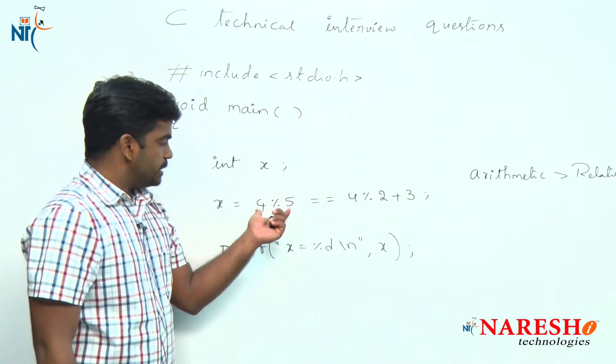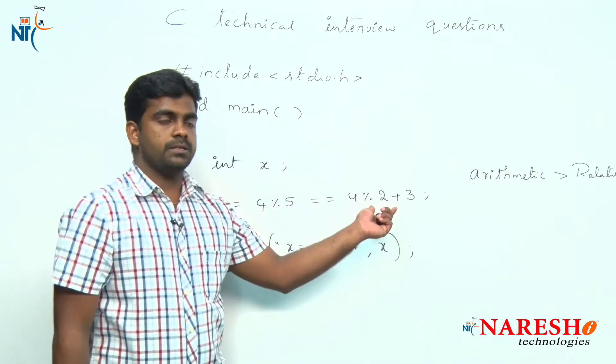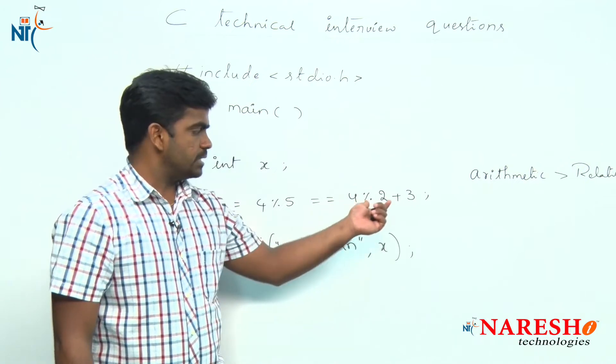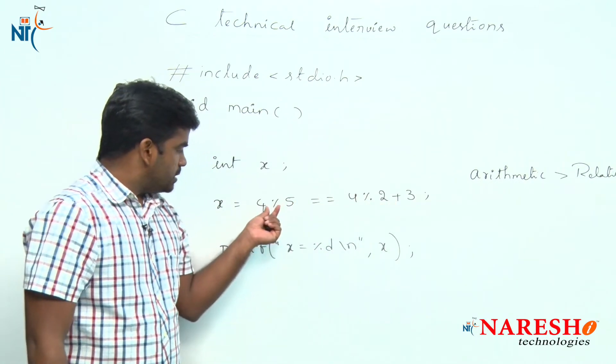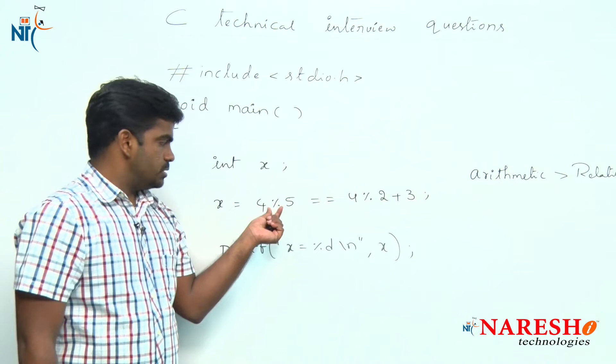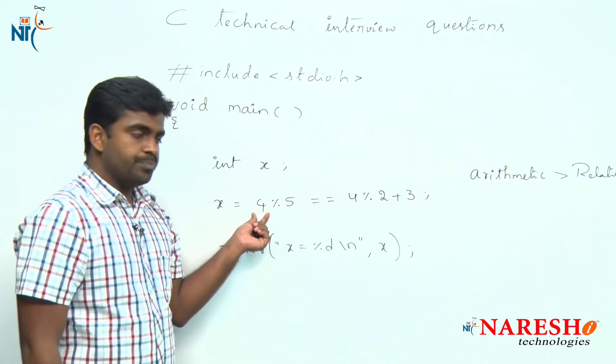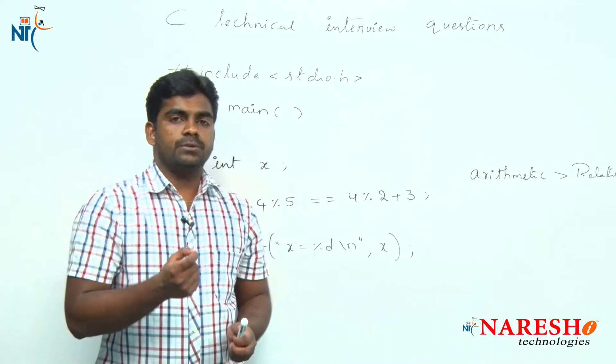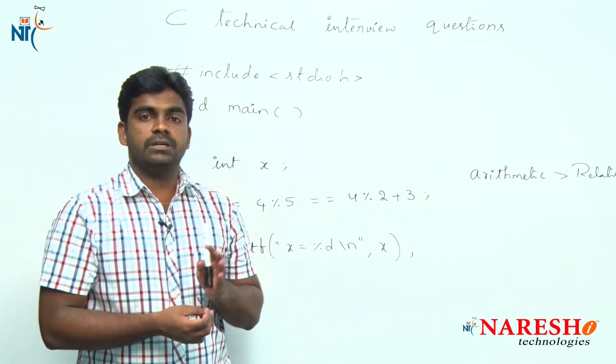But before that, first we need to execute these two. When comparing these, here are arithmetic operators in this expression. This is a mod operator. 4 mod 5 is a mod operator, which means it will perform a division operation and it will give the remainder.